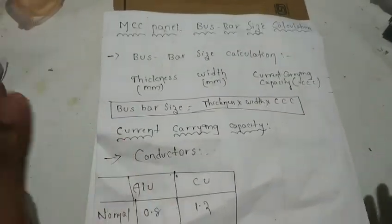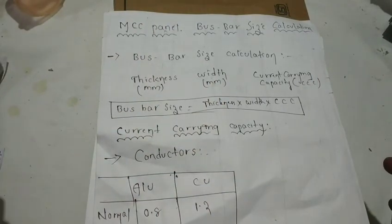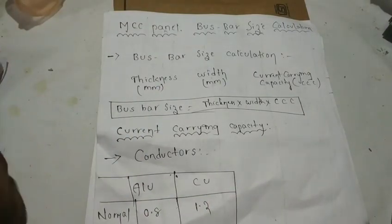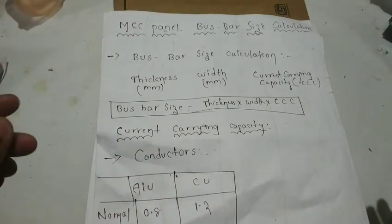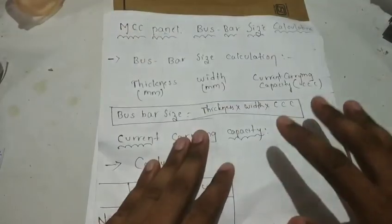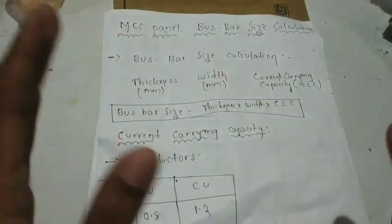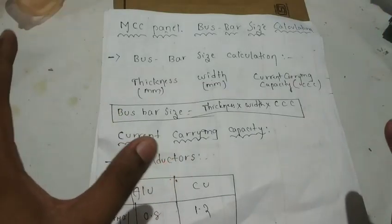Hello friends! Now we are going to talk about MCC Panel Bus Bar Size Calculation. This bus bar can be calculated as well. So I have 900 amps. Then you have the size of the bus bar, the thickness of the bus bar, and the width of the bus bar. What type of bus bar - this is aluminium bus bar, copper bus bar - and the current rating value. I will calculate the thickness.